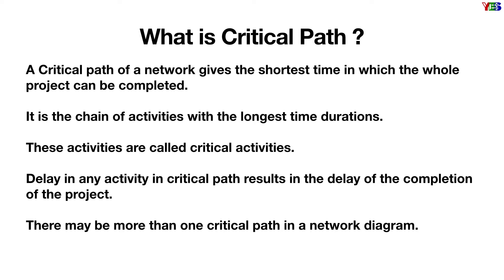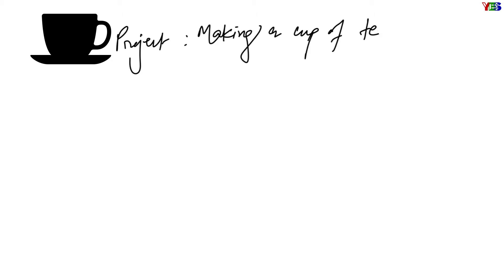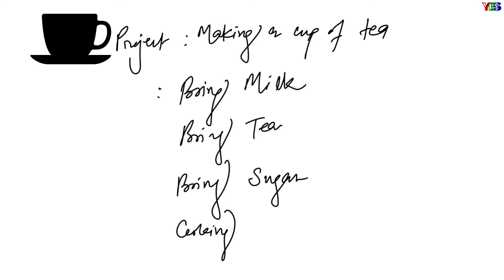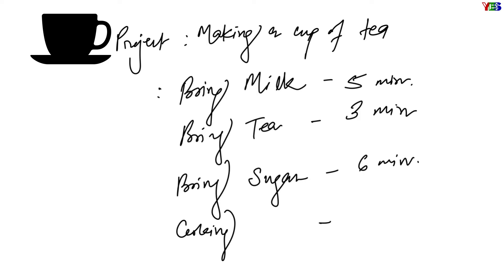To understand this, let us take a simple example: making a cup of tea as a project. For that, you need to bring milk, tea, and sugar, and you need to cook it afterward. These are the activities to complete this project. You need 5 minutes to bring milk, 3 minutes to bring tea, 6 minutes to bring sugar, and 10 minutes to cook it afterward.